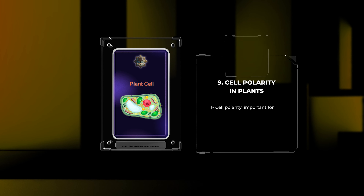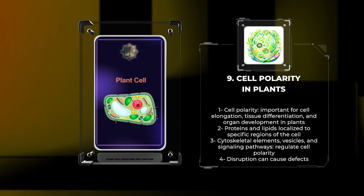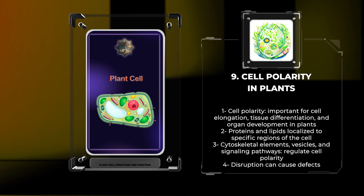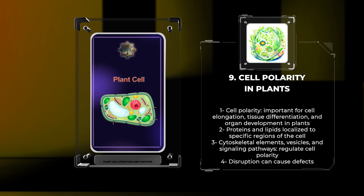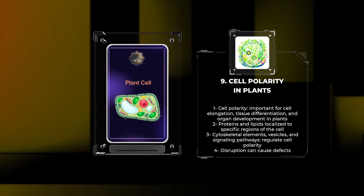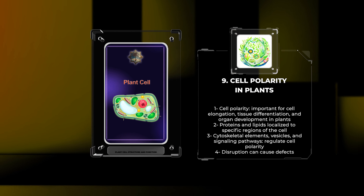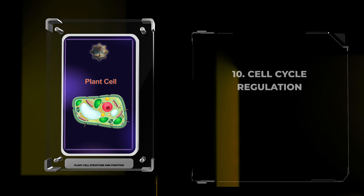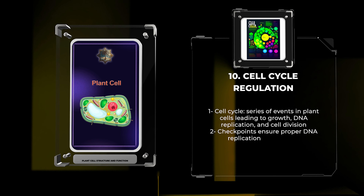Understanding plastid development is crucial for comprehending plant cell mechanisms and optimizing plant-based product production. Cell polarity refers to how cellular components are asymmetrically distributed in cells, leading to specialized structures. In plants, it's important for cell elongation, tissue differentiation, and organ development. Proteins and lipids are localized to specific regions of the cell, directing growth. Cytoskeletal elements, vesicles, and signaling pathways regulate cell polarity. Disruption can cause defects.